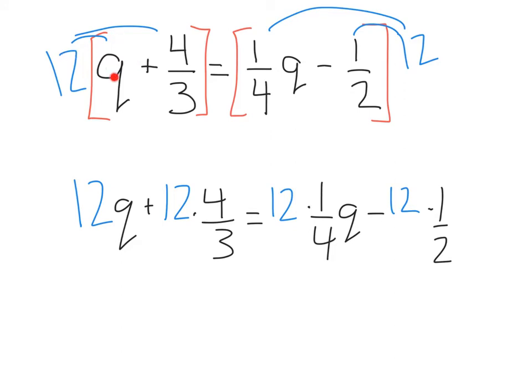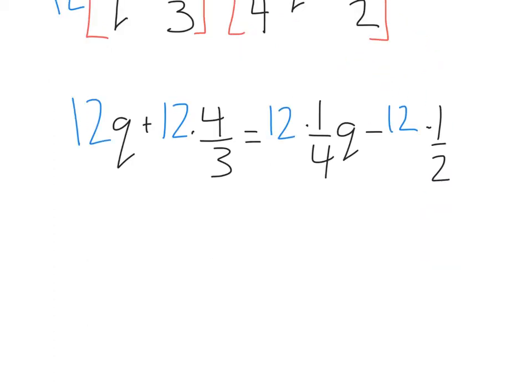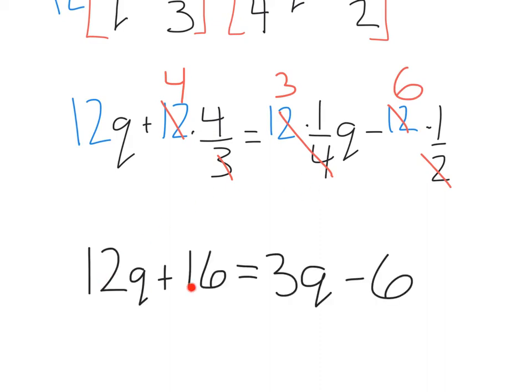Distributing that in, we have 12q plus 12 times 4/3 equals 12 times (1/4)q minus 12 times 1/2. Okay, let's clear these guys out. 12 and 3 are going to leave us with 4. 12 divided by 4 is going to leave us with 3. And then 12 divided by 2 leaves us with 6. From there, let's rewrite our equation without fractions. 12q plus 4 times 4, 16, equals 3 times 1, 3q, minus 6 times 1, 6.